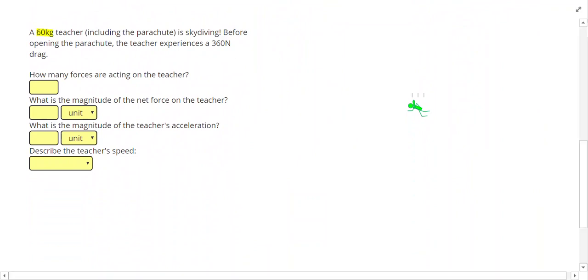A 60 kilogram teacher, including the parachute, is skydiving. Before opening the parachute, the teacher experiences a 360 N drag. Alright, so to start this problem, I'm going to set up by listing net force, mass, and acceleration.